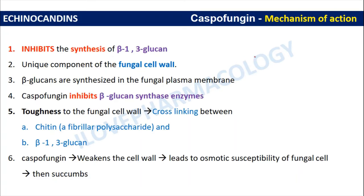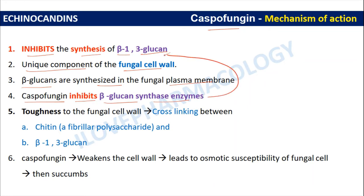Moving on to the mechanism of action of caspofungin: echinocandins mainly inhibit the synthesis of beta-1,3-glucan, which is a unique component of the fungal cell wall. Beta-glucans are synthesized in the fungal plasma membrane, and caspofungin inhibits the beta-glucan synthase enzyme required for their synthesis.